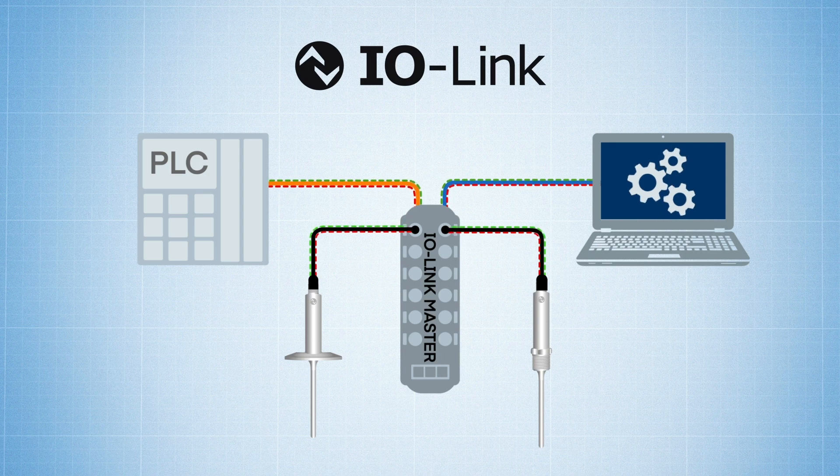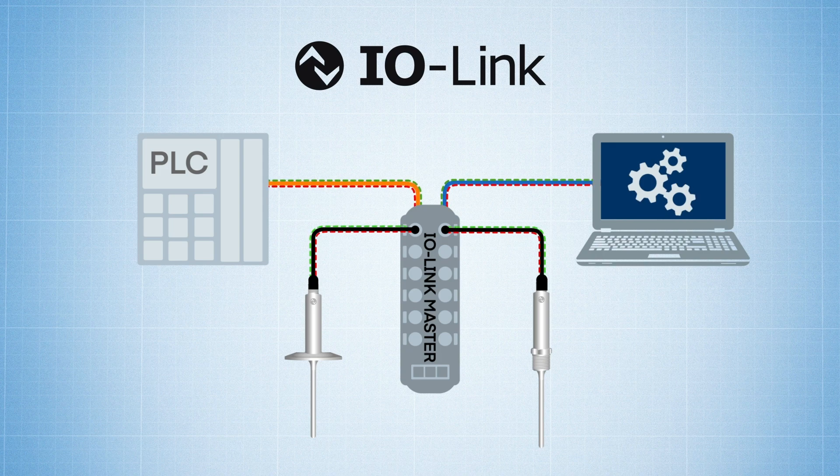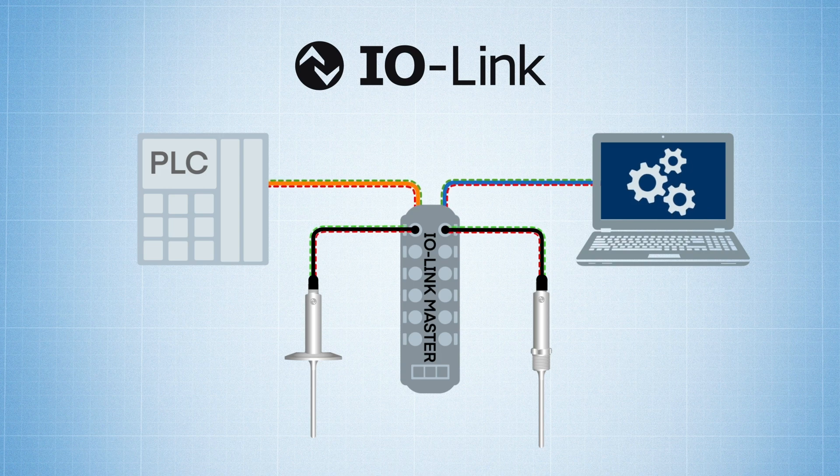IO-Link is the first worldwide standardized serial communication protocol that enables bi-directional data exchange between sensors, actuators, and other field devices, enabling a 100% digital signal path from your field-mounted sensors all the way to your PLC.